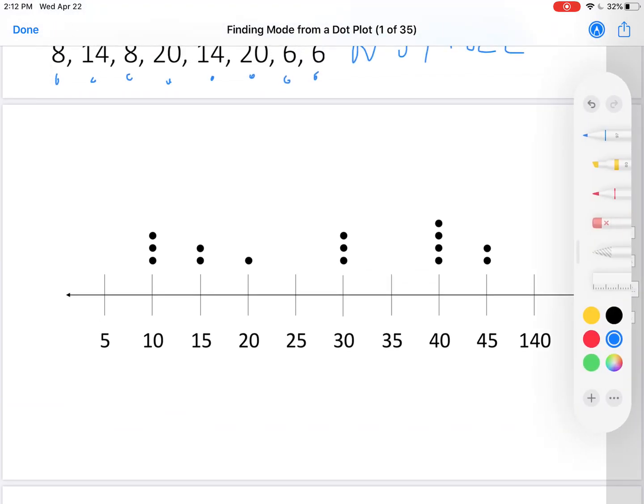Here's our first dot plot. The number 10 occurs 3 times. The number 15, 2 times. The number 20, once. 30 occurs 3 times. 40 occurs 4 times. And 45 occurs twice. The mode is 40.